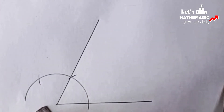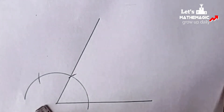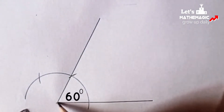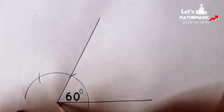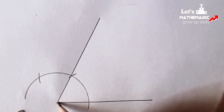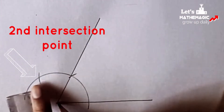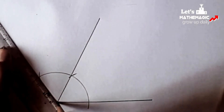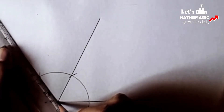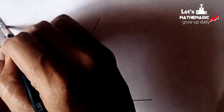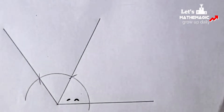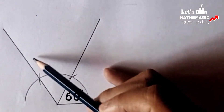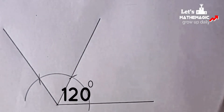We have formed an angle — this angle is 60 degrees. Now if we join the next intersection point, as you can see in the video, we will get another 60 degrees, and altogether we will get 120 degrees. We have joined it and got another angle: 60 degrees, and the full angle is 120 degrees.